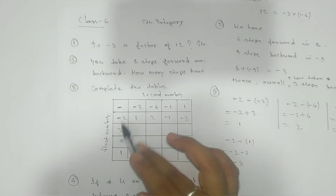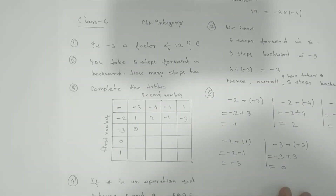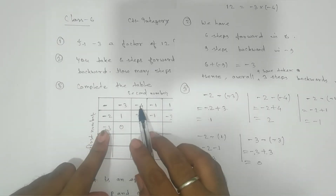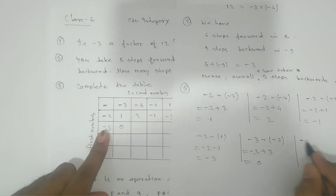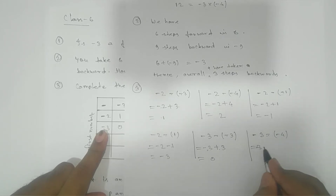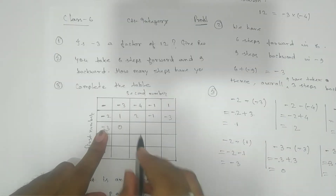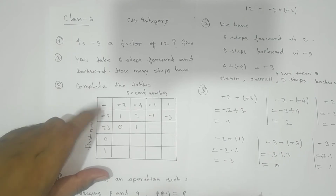Now: minus 3, minus symbol, then minus 3. Minus minus gives plus 3, and minus 3 plus 3 by subtraction gives 0. Next: minus 3, minus symbol, minus 4. Minus minus gives plus 4. Minus 3 plus 4: subtract to get 1, and since 4 is bigger and positive, the answer is positive 1.